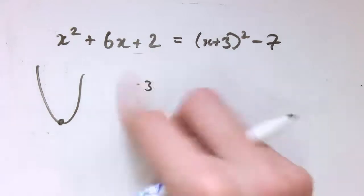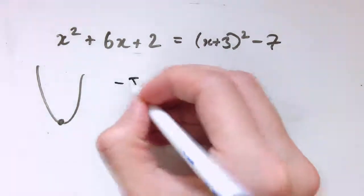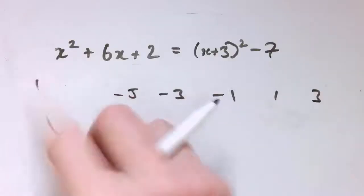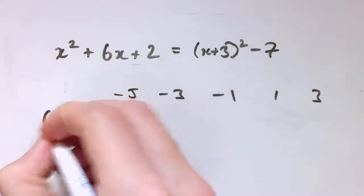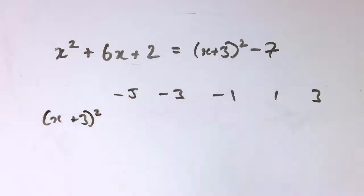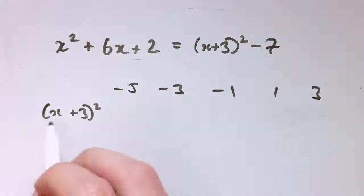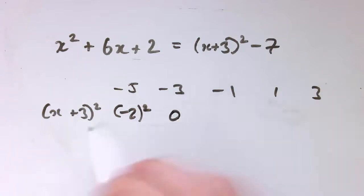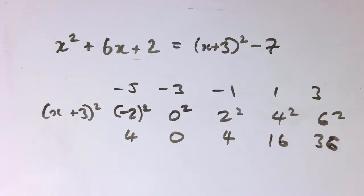Well, for different values of x. So let's say, you know, let's take, you know, minus 5, minus 3, minus 1, 1 and 3. And think about what x + 3 squared would be. So for minus 5, that would be minus 2 squared. For minus 3, it would be 0 squared. For minus 1, it would be 2 squared. For 1, it would be 4 squared. For 3, it would be 6 squared. Okay, so this is 4, 0, 4, 16, 36.